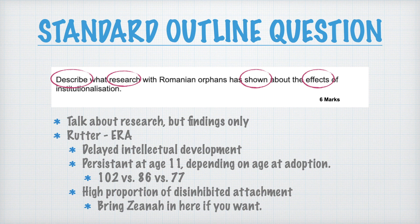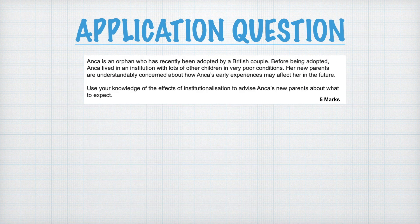Remember we're talking about the findings and don't over-egg it. It's six marks, so you want a fair amount of detail but you can easily do all of that in 150 words or so. You don't need Rutter and Zena to the same extent — a lot of one and a little bit of the other will be fine. So that's our first question.